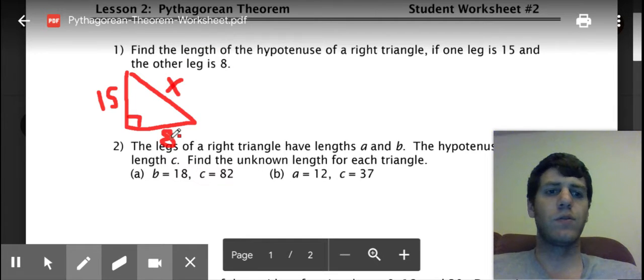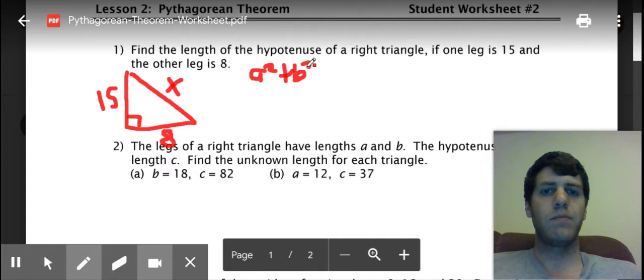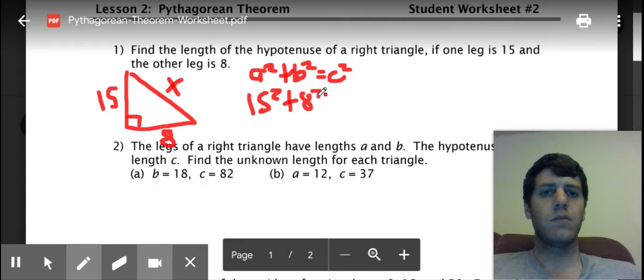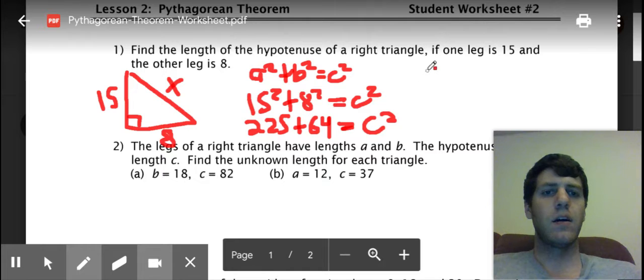Okay and then from there we want to find the length of hypotenuse so we're going to have to use the Pythagorean theorem. If you have two sides of a right triangle and you're looking for a third, use the Pythagorean theorem. So we have a squared plus b squared equals c squared. Okay, a and b are your two legs, so that's 15 and 8. So we're going to do 15 squared plus 8 squared equals c squared. Okay, 15 squared is 225, 8 squared is 64.